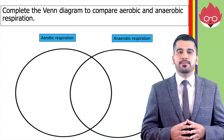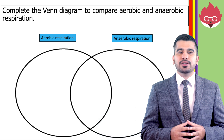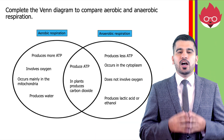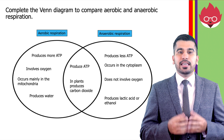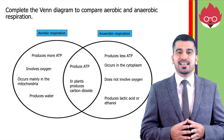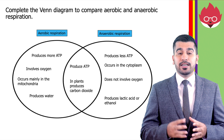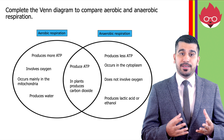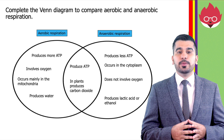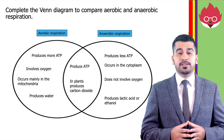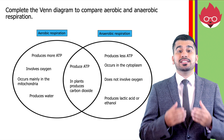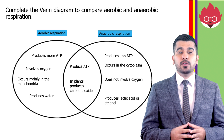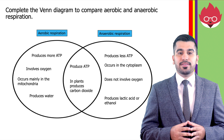Let's do a progress check. Complete the Venn diagram to compare aerobic and anaerobic respiration. Aerobic respiration produces more ATP, involves oxygen, occurs mainly in the mitochondria (and cytoplasm), and produces water. Similarities: both produce ATP, and both aerobic respiration and anaerobic respiration in plants produce carbon dioxide. For anaerobic respiration: it produces less ATP, occurs in the cytoplasm, does not involve oxygen, and produces lactic acid or ethanol.